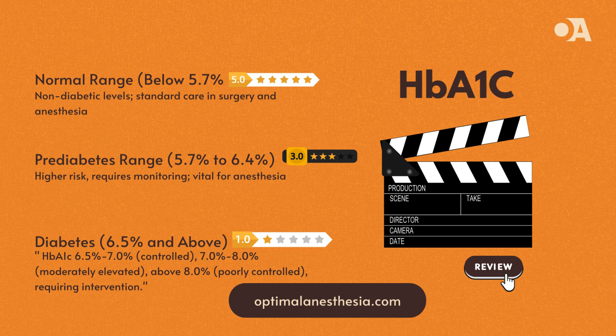High HbA1c, above 8%, suggests poorly controlled diabetes, necessitating comprehensive review and intervention. Preoperative planning requires detailed assessment and optimization of glycemic control to minimize surgical risks. High HbA1c levels are associated with increased risks of infection, poor wound healing, and cardiovascular complications during and after surgery.